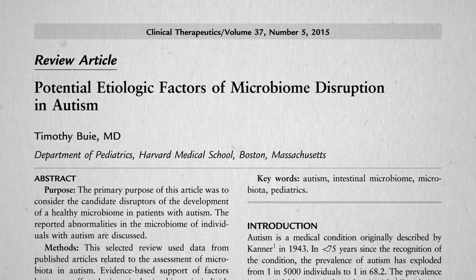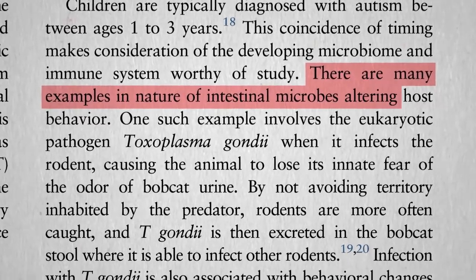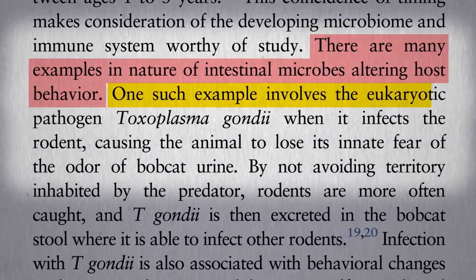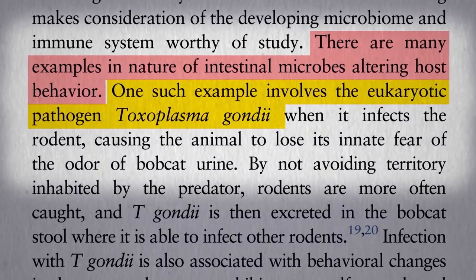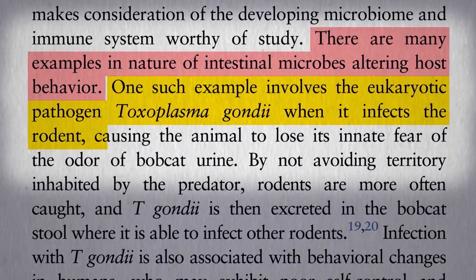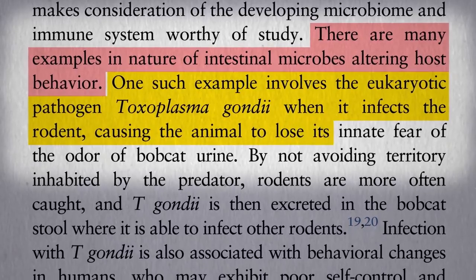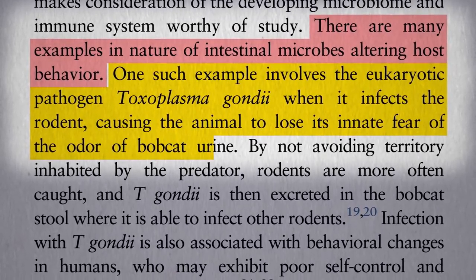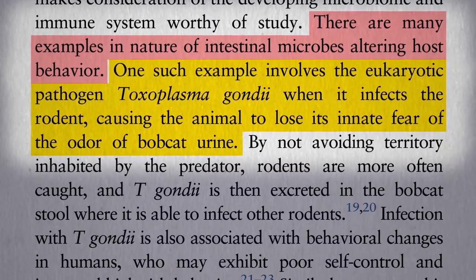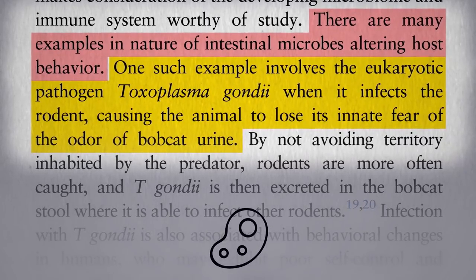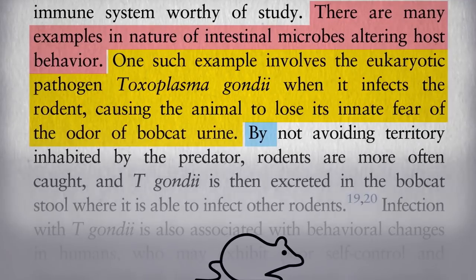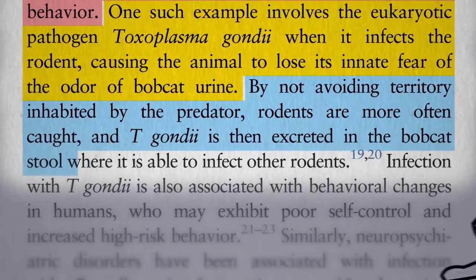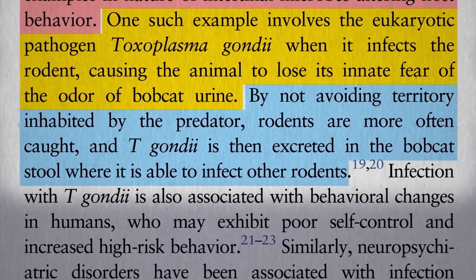There are many examples in nature of intestinal microbes altering host behavior. One such example involves the brain parasite toxoplasma. When it infects a rodent through the gut, it finds its way into the brain and causes the animal to lose its innate fear of the odor of bobcat urine. Why does the parasite care about what mice are afraid of? Because by not avoiding predators, they're more often caught and eaten, so the parasite can then go on to infect other rodents.